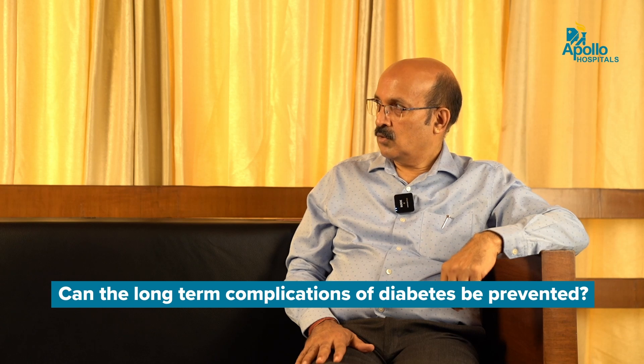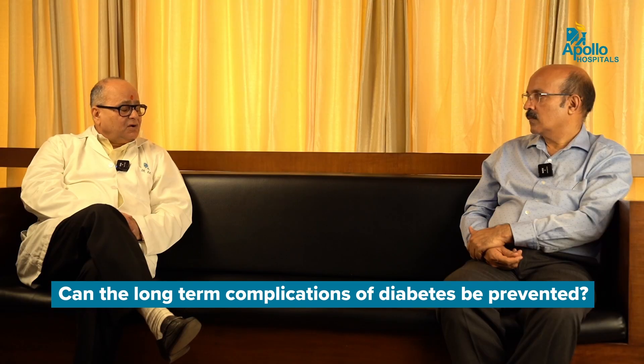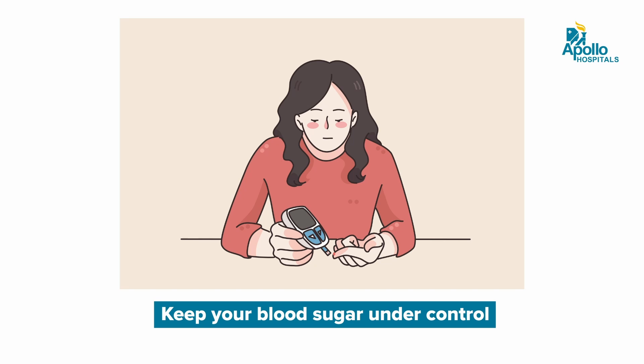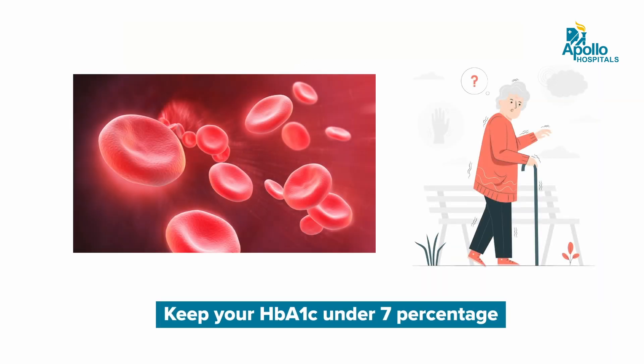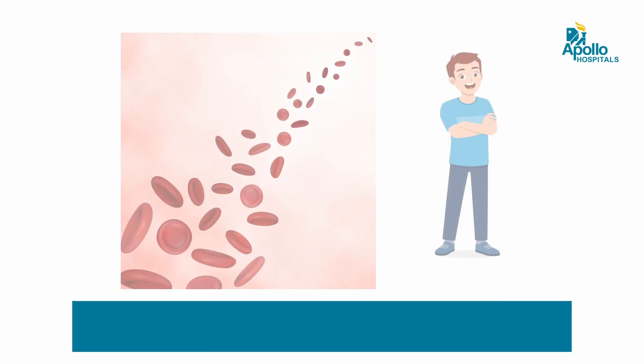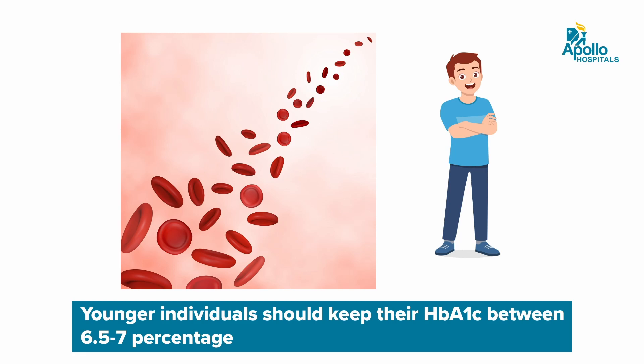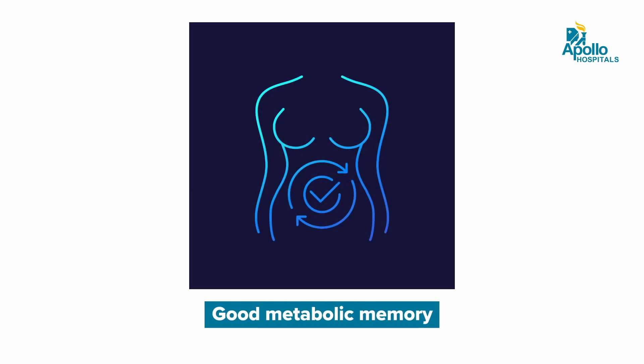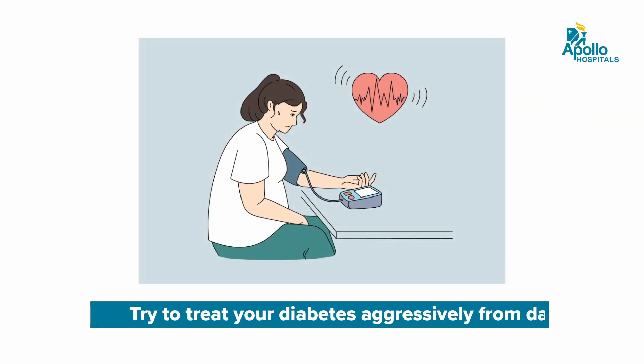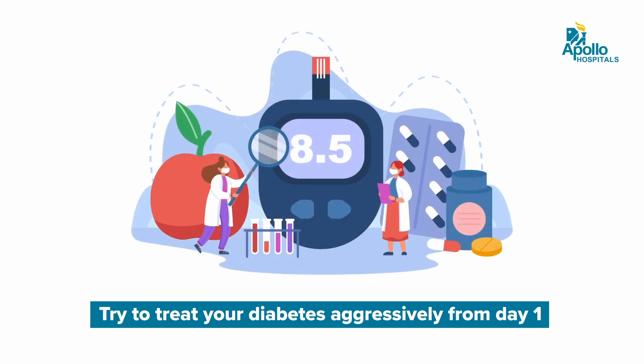Can the long-term complications of diabetes be prevented? Yes, they can. First, keep your blood sugar under control by maintaining HbA1c around 7% — it should not go above 7%. In younger individuals, keep HbA1c between 6.5 to 7%. Aggressive control of diabetes from the very beginning will delay the onset of diabetes-related complications. We call it good metabolic memory — or metabolic karma. If you have good karma from the very beginning, you will have no complications later on.